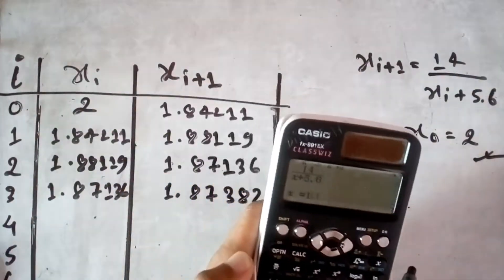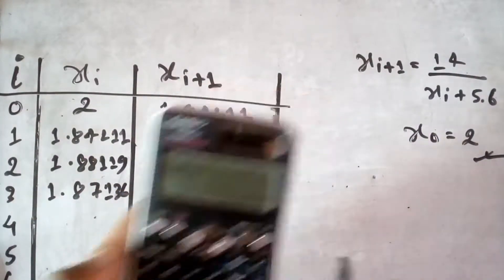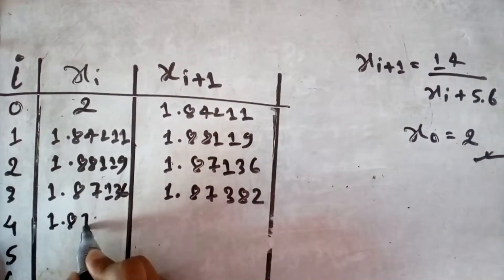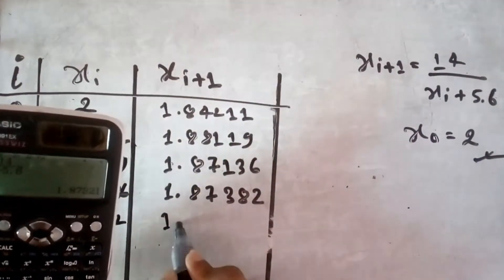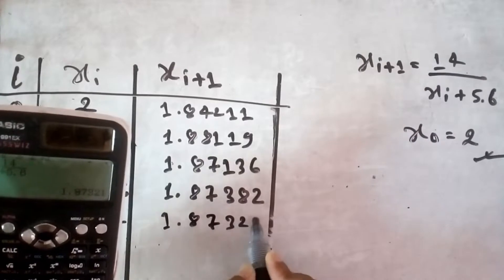Now 1.87382, put it here 1.87382, you get 1.87321.